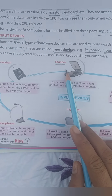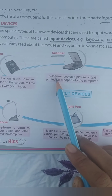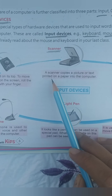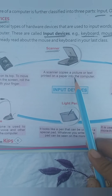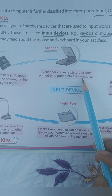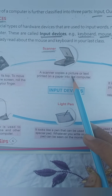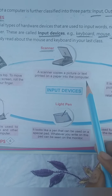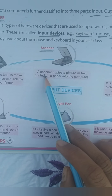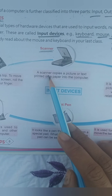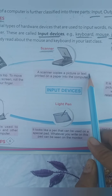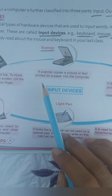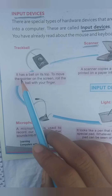A scanner copies a picture or text printed on a paper into the computer. If you want to copy your picture that is printed on paper into the computer, this is done using a scanner. Scanner क्या करता है? Scanner आपकी picture और text को computer में copy कर देता है — जो printed आपके paper पे। ठीक है?